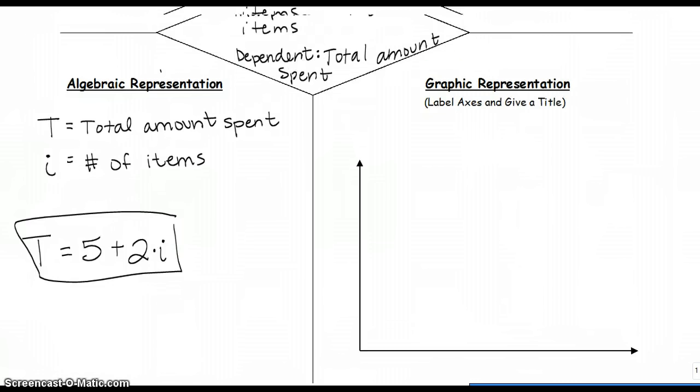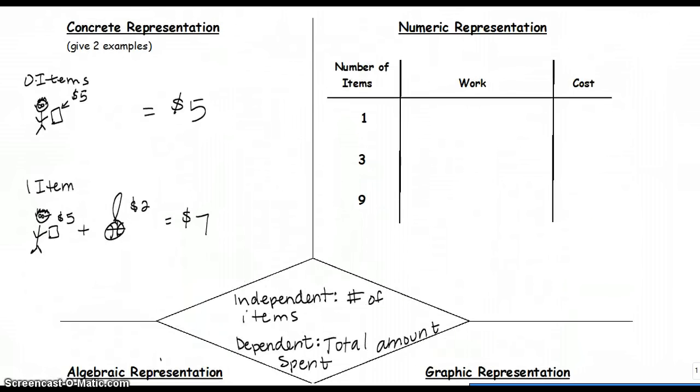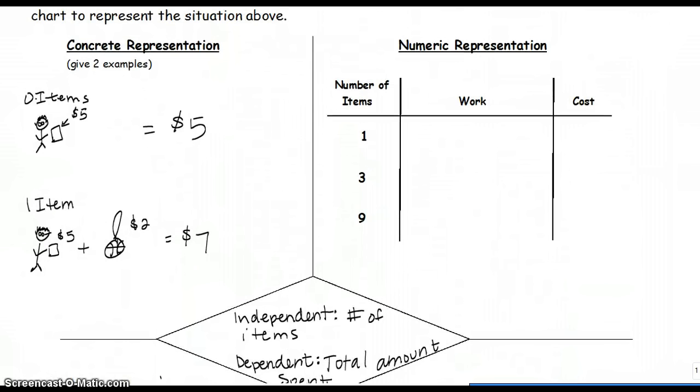That is something you are going to carry on now to complete your numeric representation, which is a table. One thing I like to do is write my function rule right here: T = 5 + 2I, because then I am going to show all my work. So my total, if I only purchased one item, is going to be $5 plus 2 times 1. Well, 2 times 1 is 2, plus the $5 to get in is $7, which we represented right there.